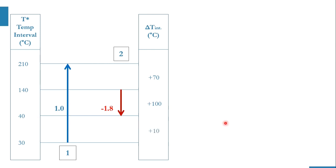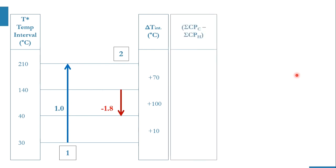After gaining experience you can start directly here. We need to calculate CP of C minus CP of H, then multiply by delta T interval to get delta H. In the first interval there is only stream one (cold stream, CP = 1), so no CP of H — the sum is just plus 1. In the second region (delta T = 100°C), both streams are present, so CP of C minus CP of H gives 1 minus 1.8 = minus 0.8.